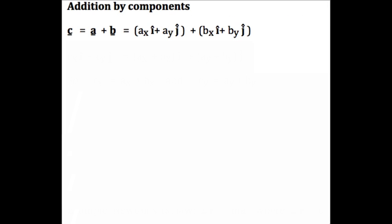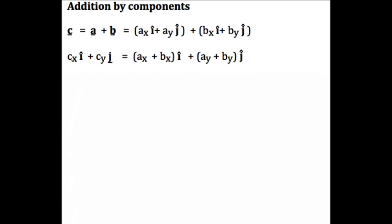If we write c equals a plus b, then we can substitute for a and b using our components and unit vectors. Then we can rearrange, gather the terms in i and j, giving us an equation now for the x and y components of vector c.